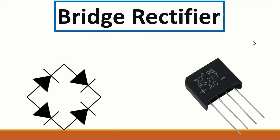Then we have the bridge rectifier. It could be four diodes like this one, or just one or two diodes. It has four terminals: the positive terminal, the negative terminal, and two AC terminals. The positive terminal is connected to the anodes of two diodes, and the negative terminal is connected to two cathodes and to an electrolytic capacitor.